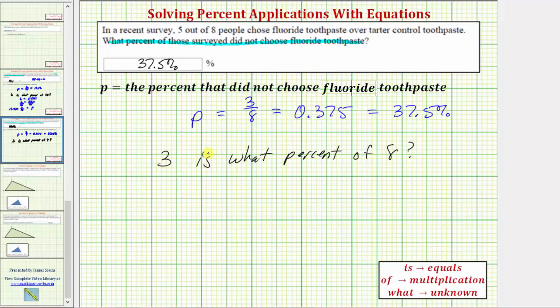To write the equation, we have three is, so we have three equals what percent, or what represents the unknown, so we have p, and then of eight means times eight. Well p times eight is eight p, so we have three equals eight p.